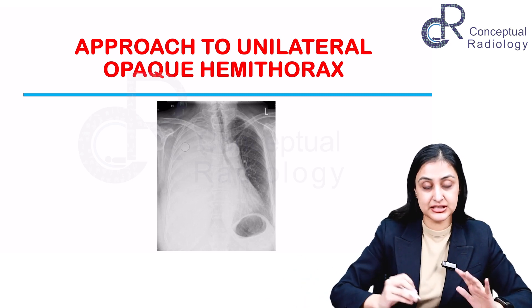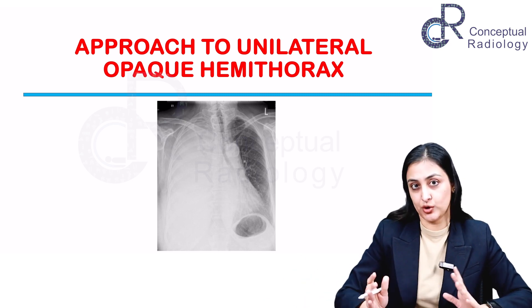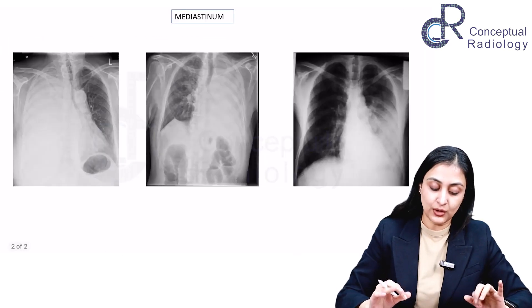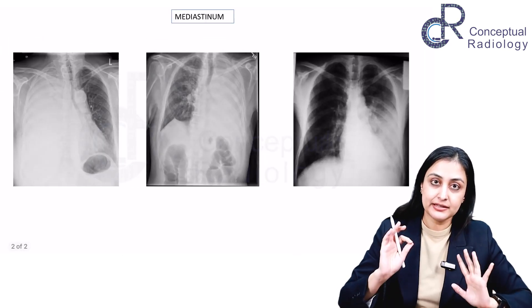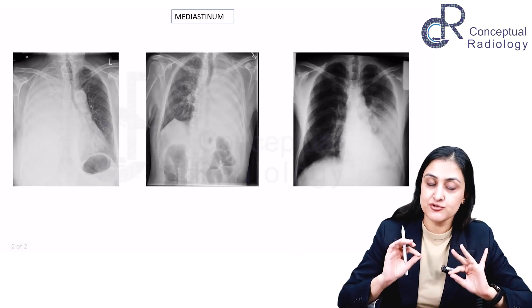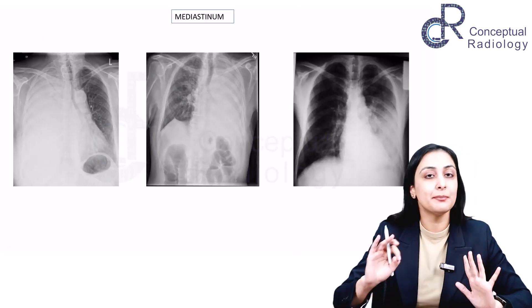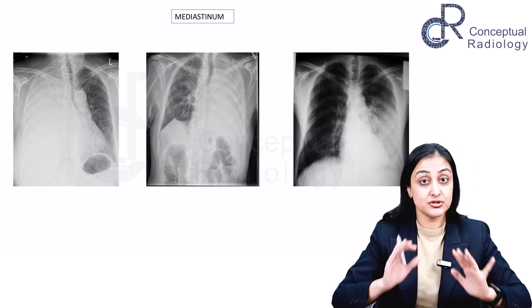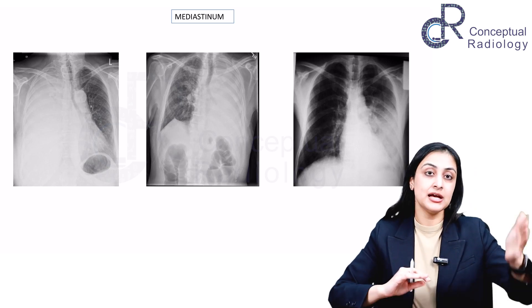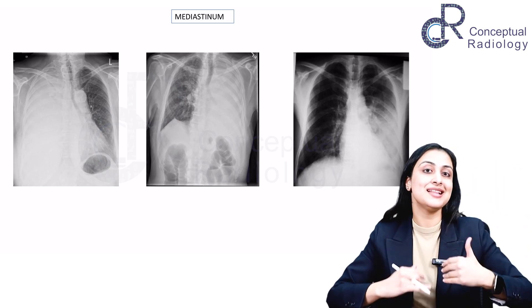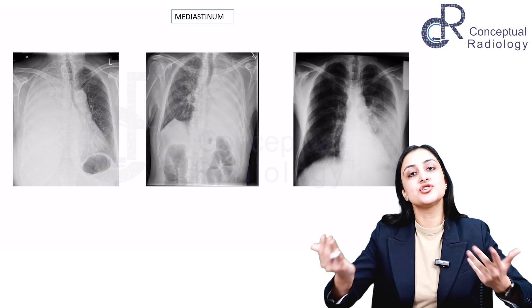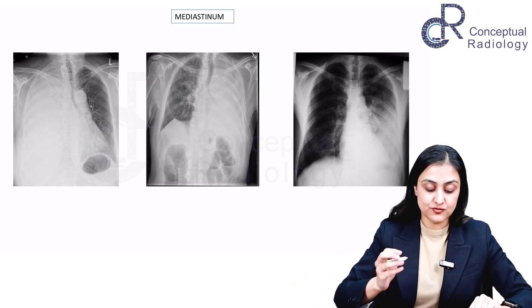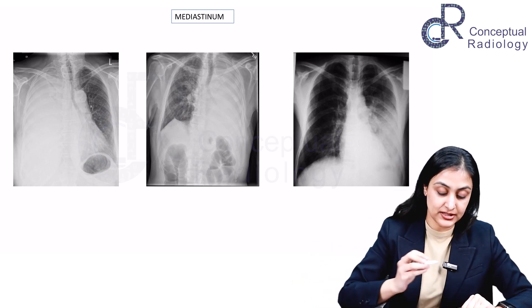This is a case where one side of the chest appears much more opaque than the other, and there is no controversy as to which side is abnormal — it is obviously the opaque one. The only thing you have to look at here is the mediastinum: whether it is shifted, and if so, is it an ipsilateral or contralateral shift? That is all we have to assess.